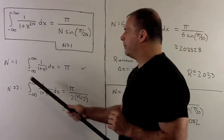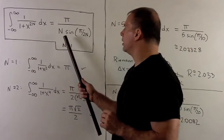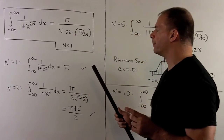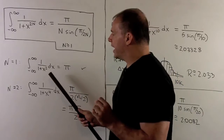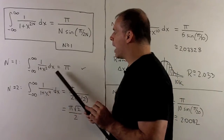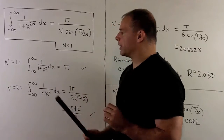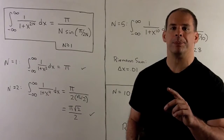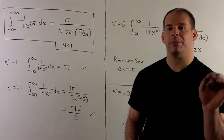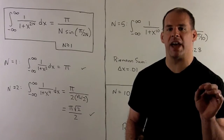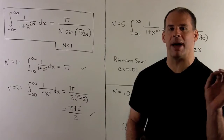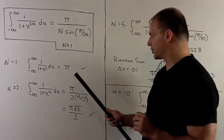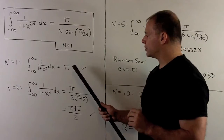If I let n equal 1, we're looking at π over sine of π/2, which is just π. So if I take this improper integral, the way we would normally solve this, I'll let x equal tan θ. Then when we compute the antiderivative we get inverse tan, and we're looking at π/2 minus (−π/2), or π for our final answer. So that checks out.